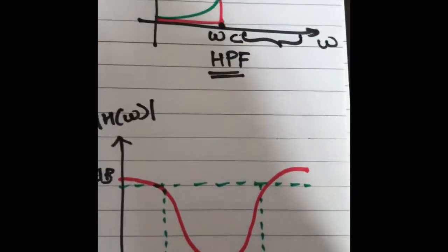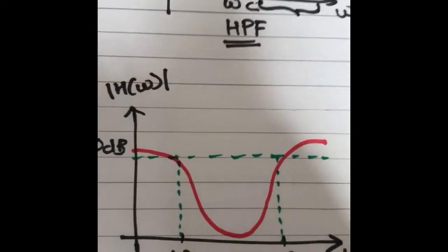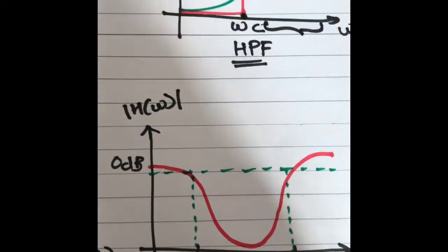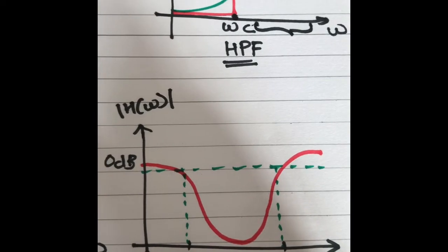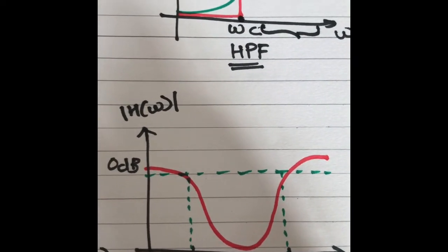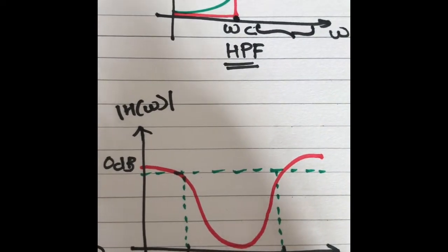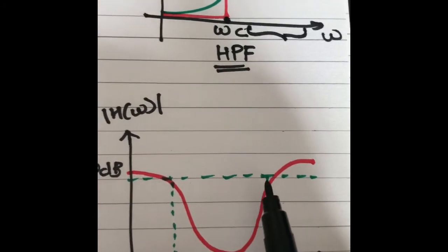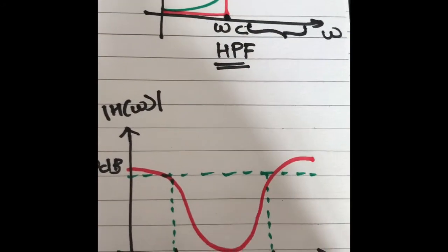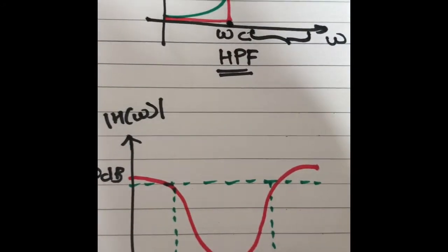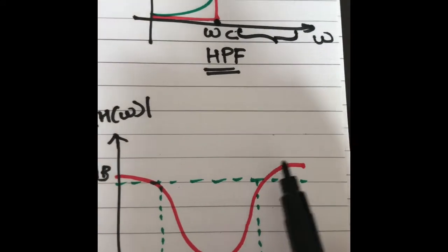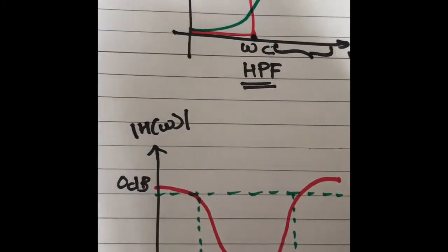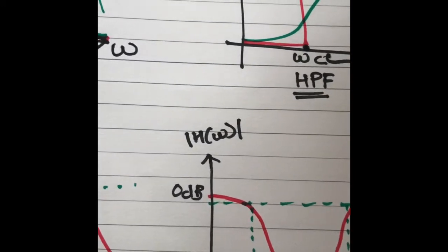Similarly, for the band stop filter — BSF stands for band stop filter — all frequencies between omega 1 and omega 2 are highly attenuated. Only frequencies outside the range of omega 1 and omega 2 are passed. That is the band stop filter.